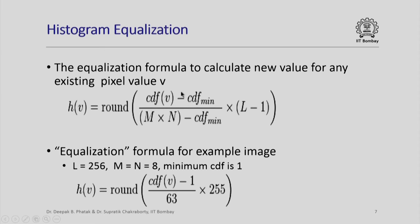Here are the formulae from the Wikipedia article. The equalization formula permits us to calculate a new value for every pixel value V. V is an existing pixel value in the current image. There is a formula which maps this V into h(V) given by rounded value of CDF(V) minus CDF_min divided by M×N minus CDF_min and the whole thing multiplied by L minus 1.